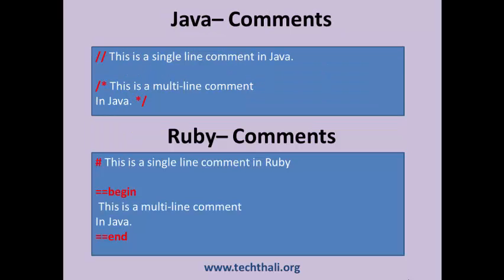This slide compares how comments are used in Java and Ruby. In Java, we have single line comments and multi-line comments. Ruby also supports single and multi-line comments. However, multi-line comments are not popular and have a distinct syntax.